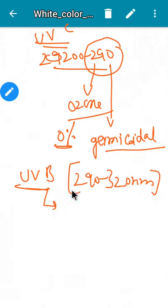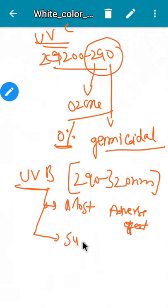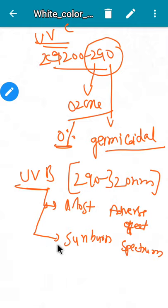Ultraviolet B has a wavelength ranging from 290 to 320 nanometers. The most adverse effects of ultraviolet rays are due to ultraviolet B, and because they cause adverse effects they are called the sunburn spectrum. The percentage of ultraviolet B in the ultraviolet spectrum is around five percent.